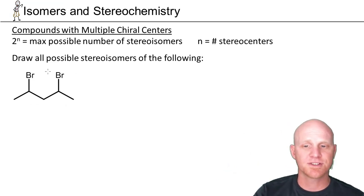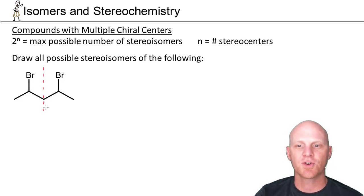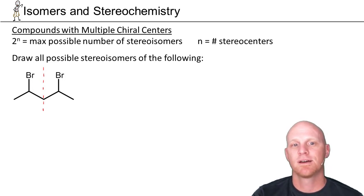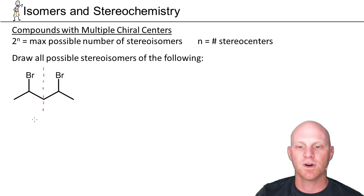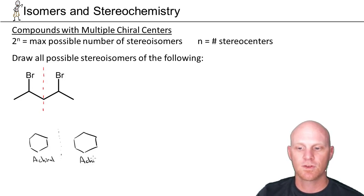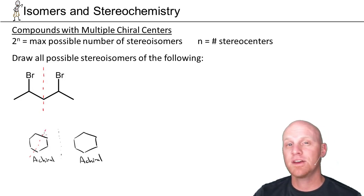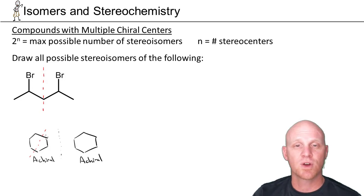Looking at this compound, we'll see one thing that makes it unique from the last example: depending on the stereochemistry, it might have what's called an internal mirror plane of symmetry. Any compound that has one will end up being achiral. Consider cyclohexane — its perfect mirror image is exactly the same compound. That's the definition of achiral. It turns out that if you can find an internal mirror plane in the middle of a molecule, any molecule with one will be achiral. It's not the definition of achiral, just a trick for identifying achiral compounds.